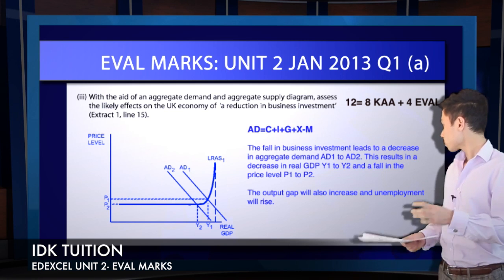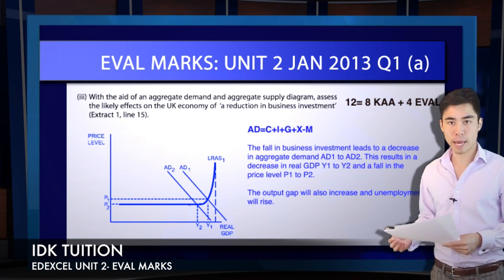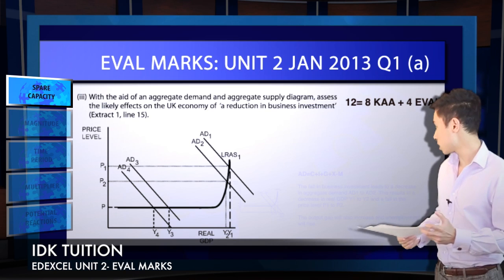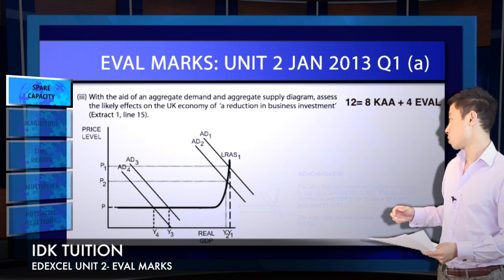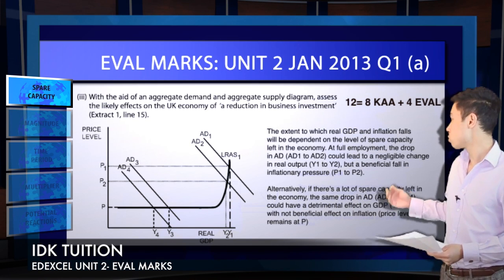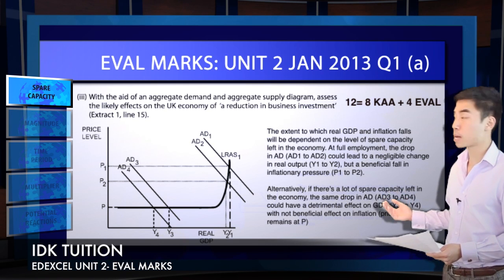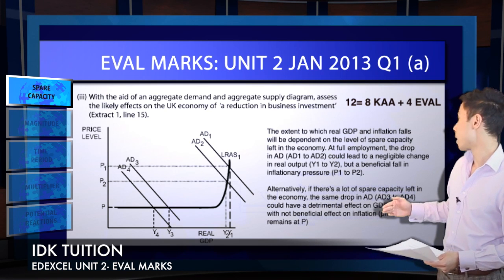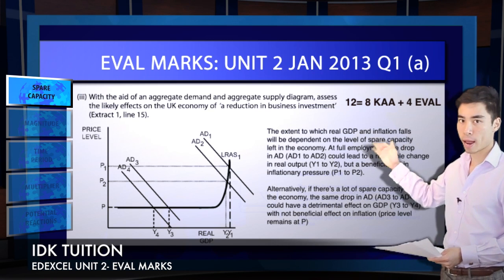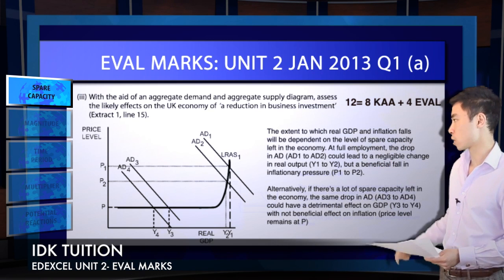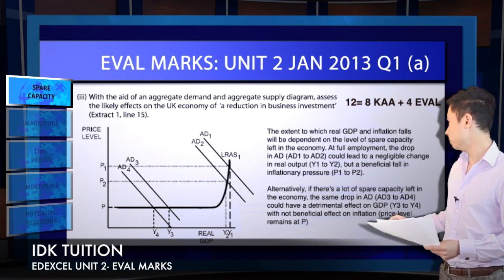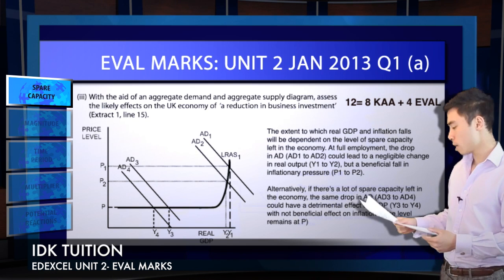The first evaluation point you could make is on spare capacity. This is a good example of where you've drawn a diagram and you're simply going to assess the case where there's lots of spare capacity left in the economy compared to the case where we're at full employment — on the vertical section of our aggregate supply curve.